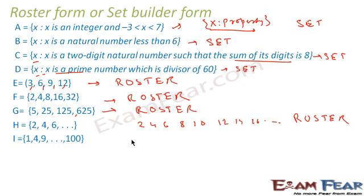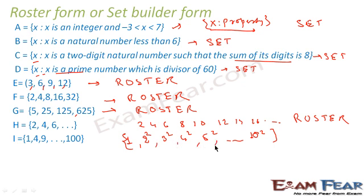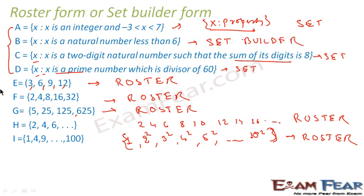One more example: a set with three dots in the center going up to 100 — for example {1, 4, 9, ..., 100}, meaning 1², 2², 3², up to 10² = 100. Since all elements are listed, separated by comma, and enclosed in curly braces, this is also roster form. So the first four sets with x colon property notation are in set builder form, and the last five with listed elements are all in roster form.